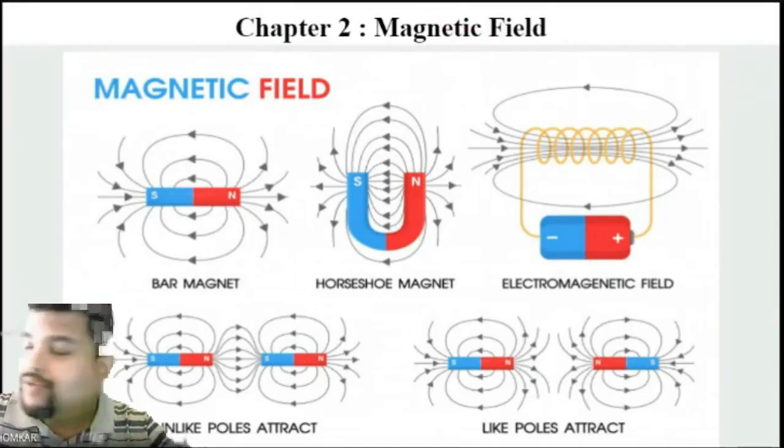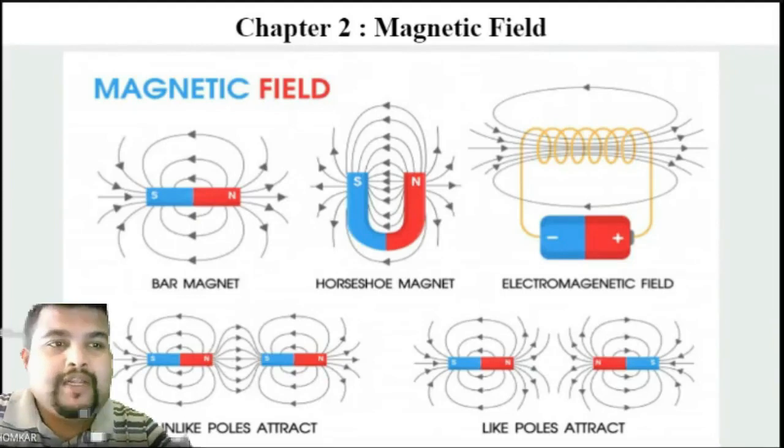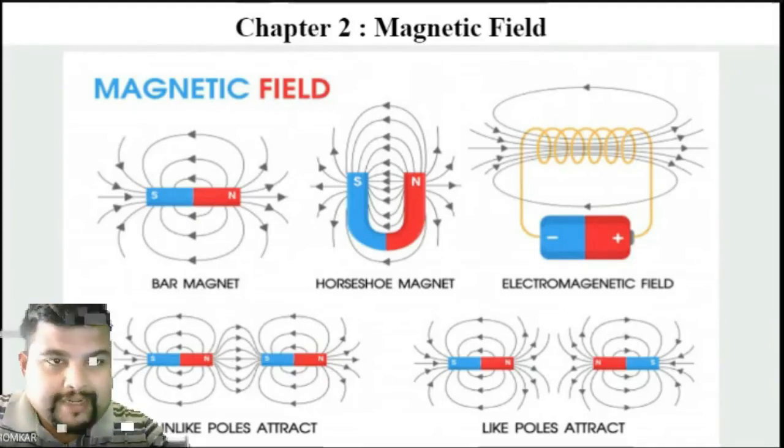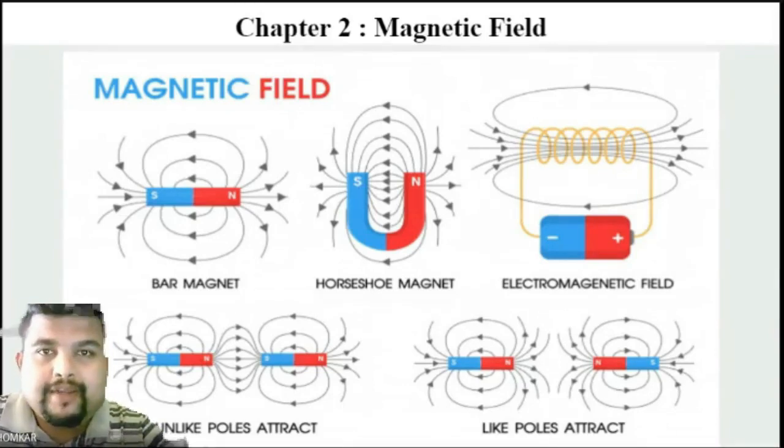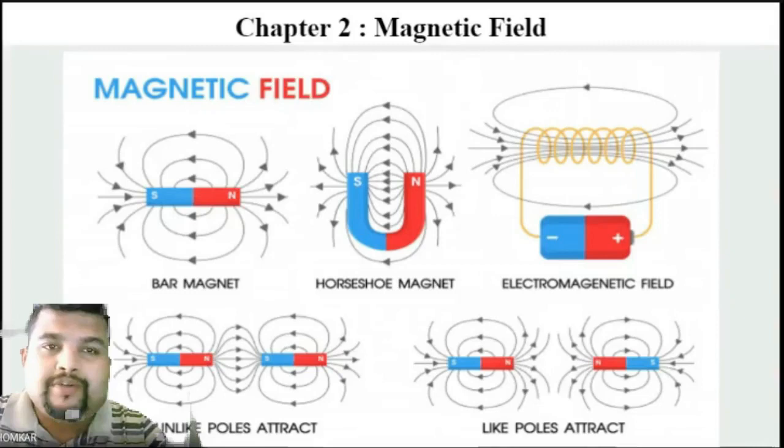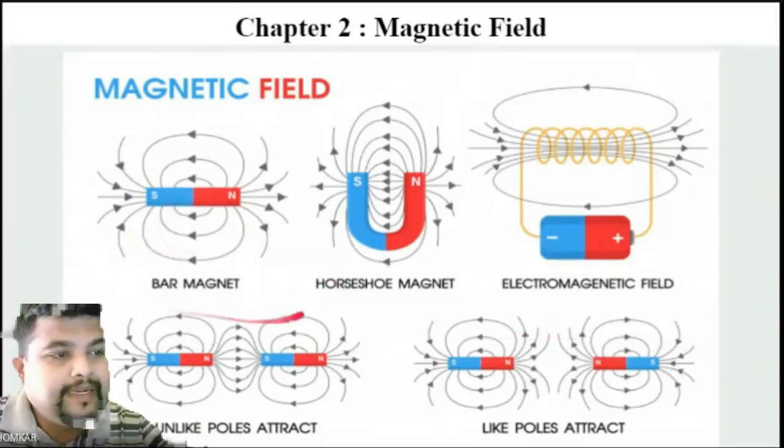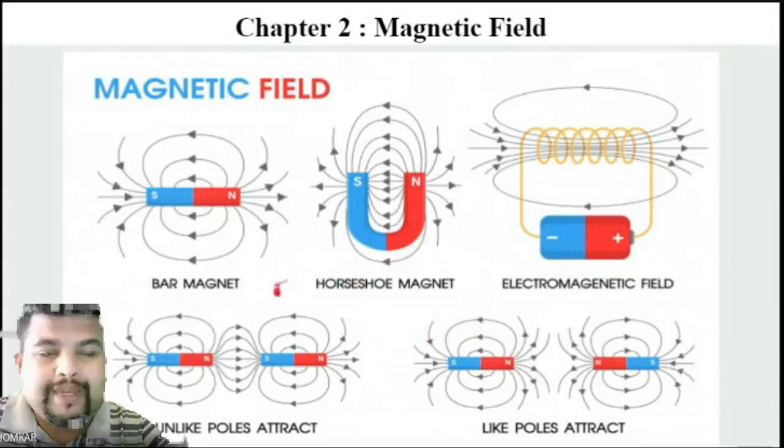First we are going to see that magnetic field is created with the help of magnets. So there are two types of magnets: one is called a permanent magnet, another is called an electromagnet. The magnets according to its shape are classified as bar magnet and horseshoe magnet.